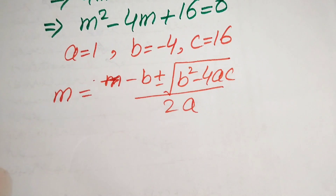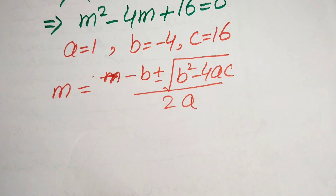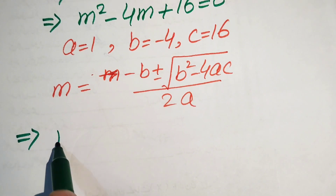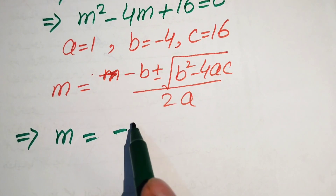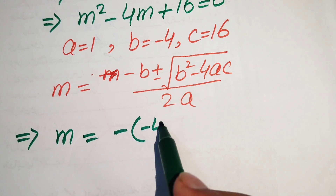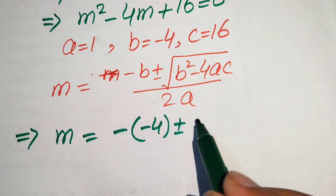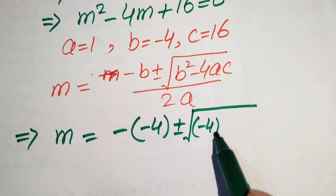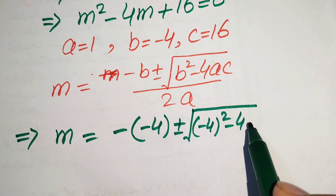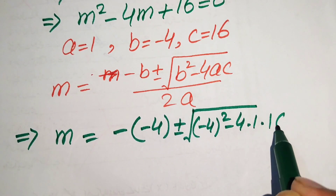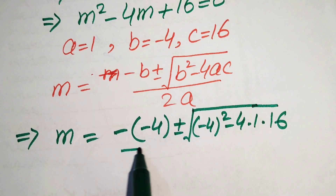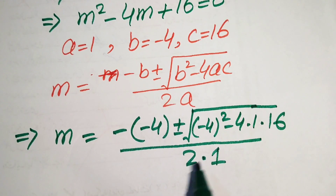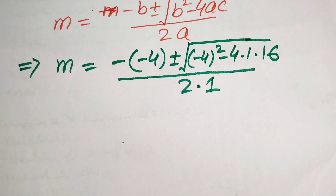We substitute the values of a, b, and c into the formula. This gives m equals minus (minus 4) plus or minus square root of (minus 4) squared minus 4 times 1 times 16, all divided by 2 times 1.